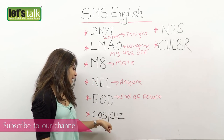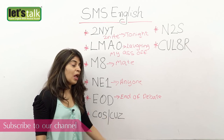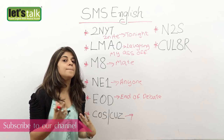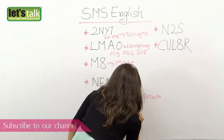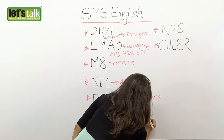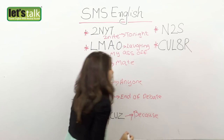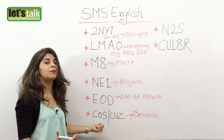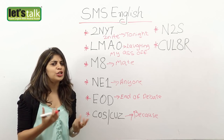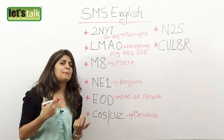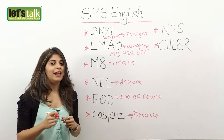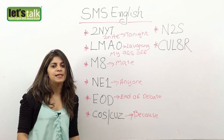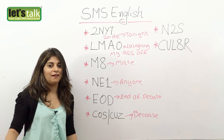Then we have COS or CUZ, which means 'cause' — basically a short form for 'because.' It's very commonly used, almost in every sentence. Whenever you are trying to use 'because,' you would always see people writing 'cause.' In fact it's not just in writing — even people communicating verbally use these short terms. They don't say 'because I went there,' they would just say 'cause I was there.'